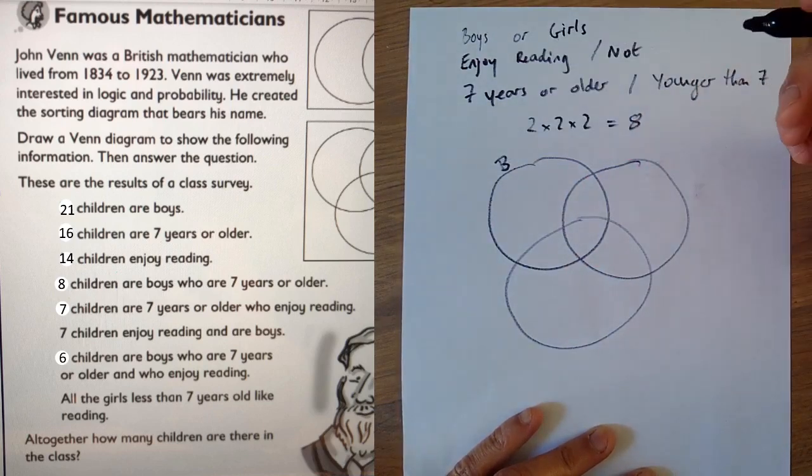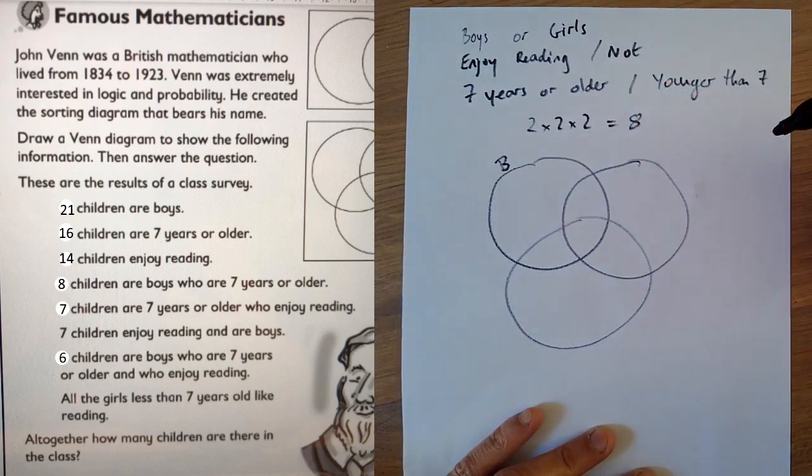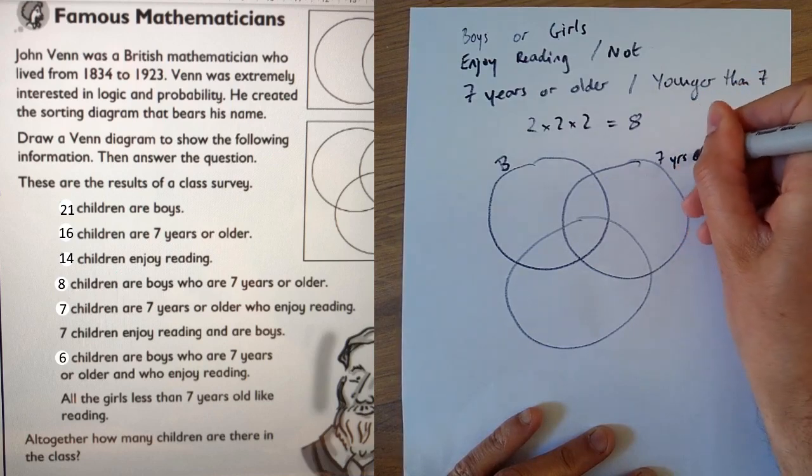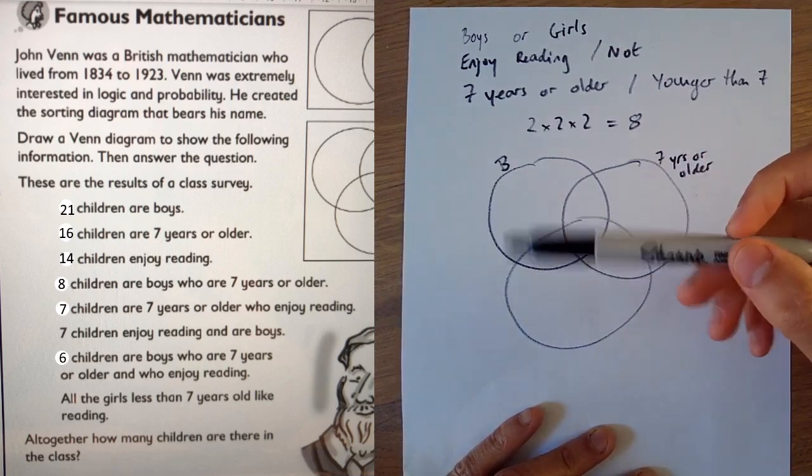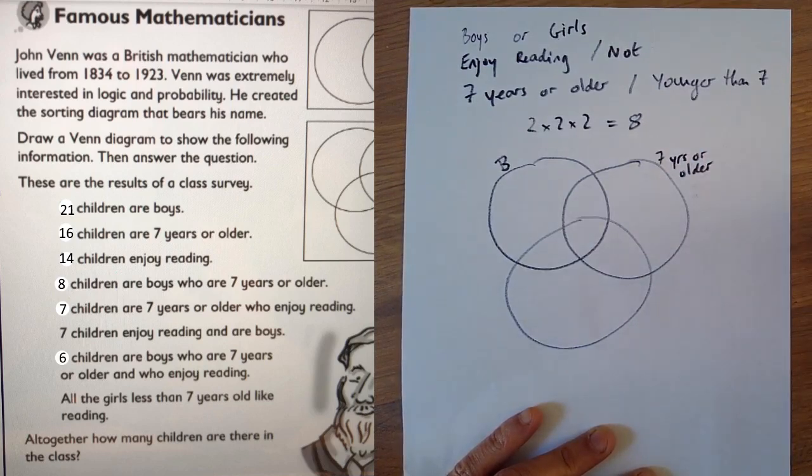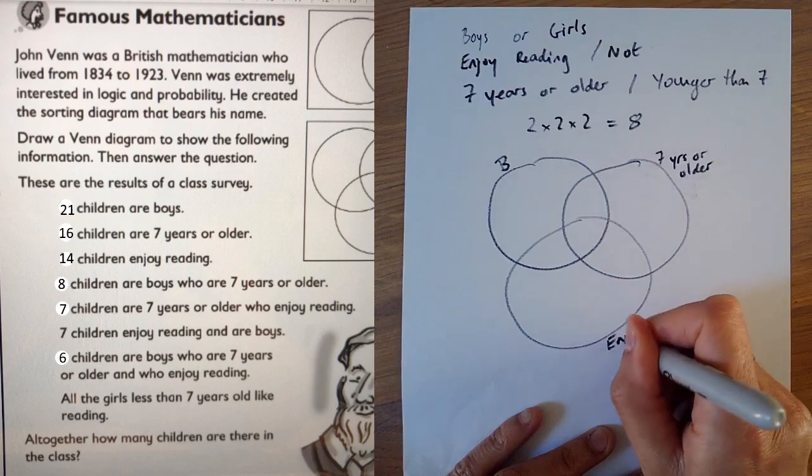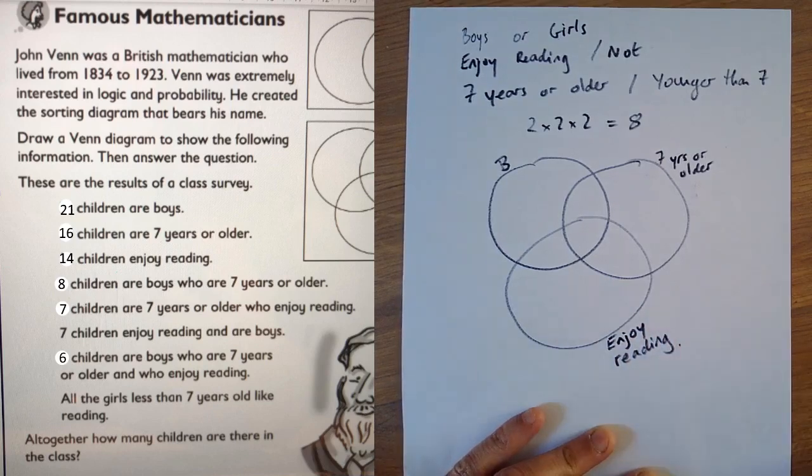You could make it girls, but it would be a bit more difficult. So we're going to call it boys. Over there it talks about seven years or older a lot. It never mentions younger than seven. So we'll have this one as seven years or older. And over in the text there it talks about enjoying reading. In fact at no point does it say not enjoying reading. So this last one here will be enjoy reading.